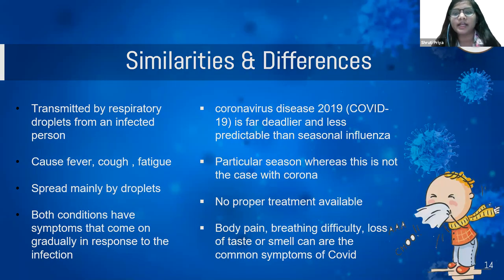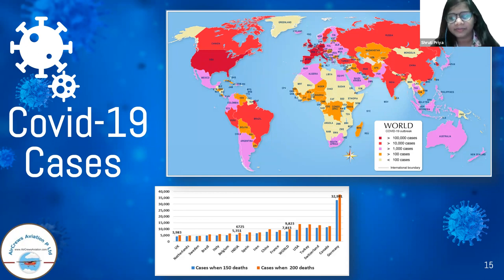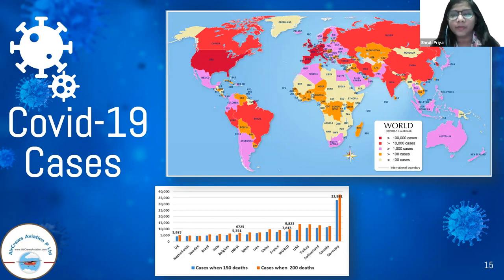This graph shows the spread of COVID-19 cases around the world. The dark red areas like Russia, China, India, and Canada are the most affected with the highest death cases. The lighter red areas like Brazil, Peru, and Turkey are affected but not as severely. Less affected areas like Mongolia and Greenland had very few cases — less than 100.